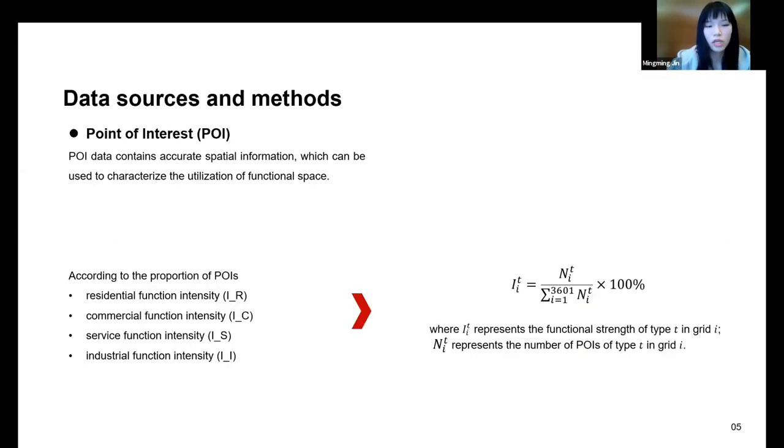Point of interest data contains accurate spatial information which can be used to calculate the utilization of the function space. In this paper, POI is defined into four categories. According to the proportion of POIs, the residential function intensity, commercial function intensity, service function intensity, and industrial function intensity are calculated. This data was acquired from Baidu platform.